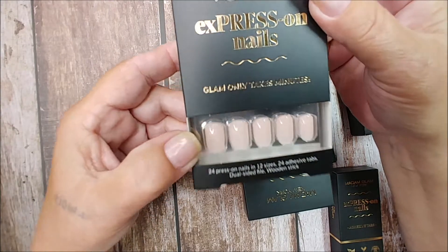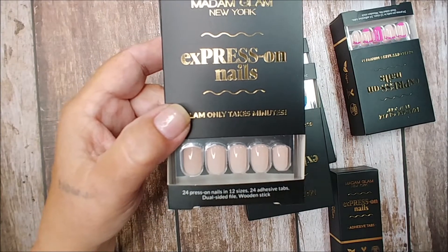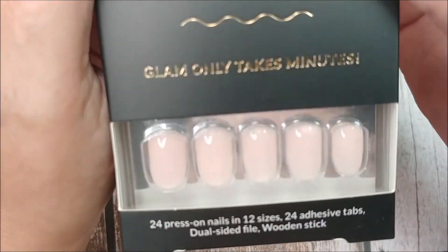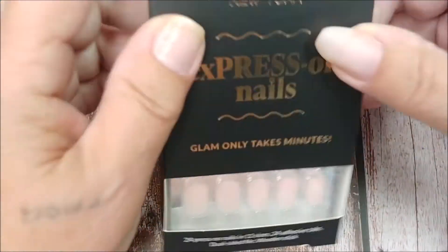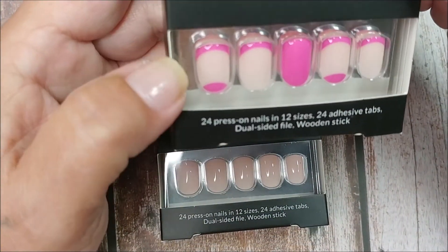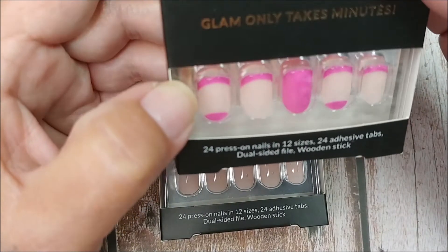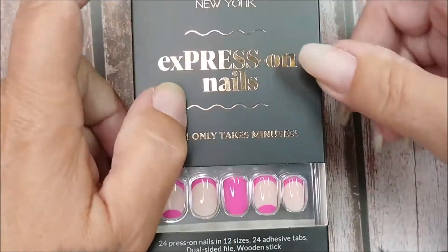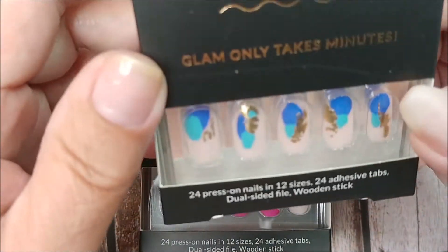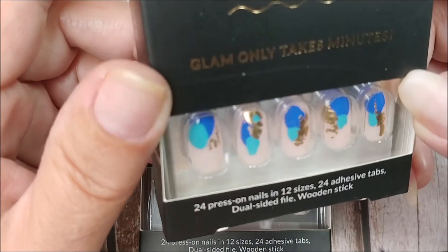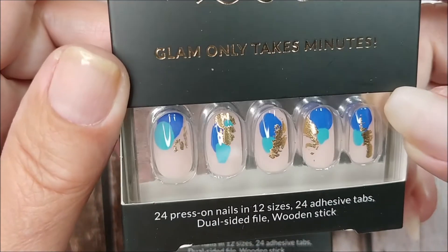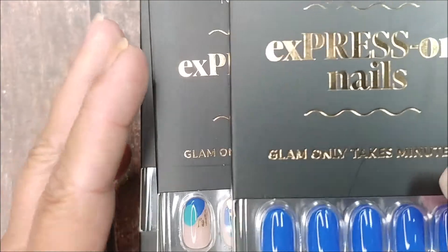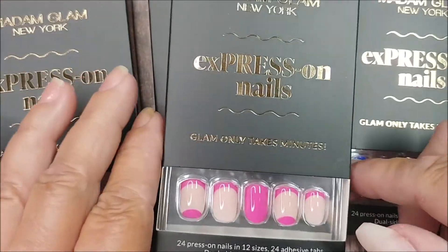So we got this kind of nude shade. We got this one, yeah, these are the short round. And then we got this one, the two shades of blue, dash of gold, and then we got straight up blue and they're all the same shape so they can be mixed and matched.